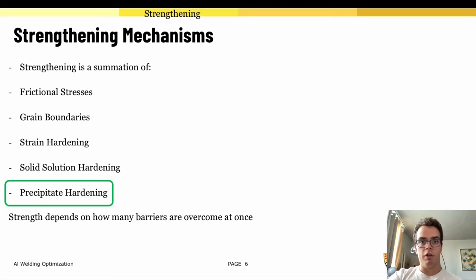And lastly we have precipitate hardening. Essentially you're forming small fine points throughout the grain structure to further resist the material. This is an extension of solid solution hardening but is a characteristic of heat treatable aluminum alloys.